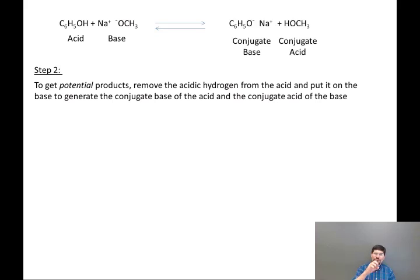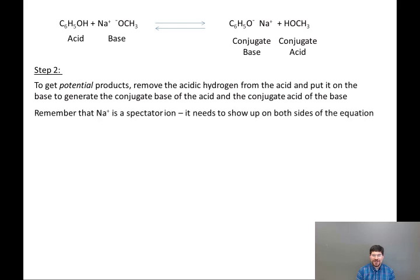So we removed the H from our acid. We've turned C6H5OH into C6H5O minus. And we've taken that hydrogen and put it on the OCH3 minus to generate CH3OH, which is the conjugate acid. The Na plus just appears on both sides of the equation. It is a spectator ion.